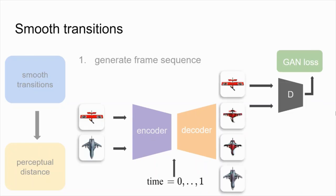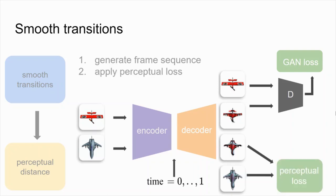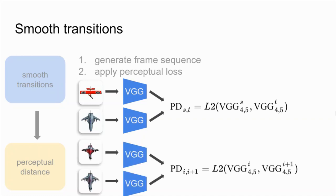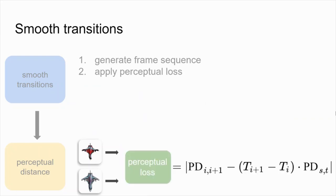In support of the second requirement of smooth transitions, rather than generating a single frame, we expand into generating a sequence of frames in one go. We apply a perceptual loss among the generated frames, designed to control the visual change as a function of the elapsed time between the frames. We define the total perceptual distance between a source and a target as the distance between their VGG features. The perceptual distance between two adjacent frames is similarly defined. Thus, the perceptual loss incurred for an adjacent pair of frames is the distance between the observed perceptual distance and the expected relative distance as dictated by the elapsed time.